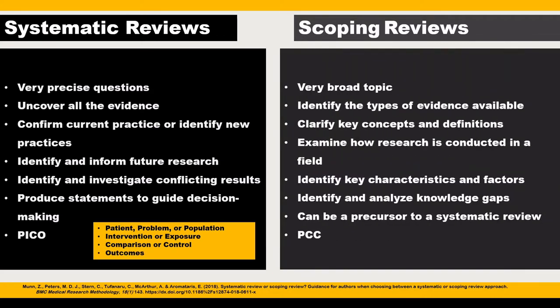On the other hand, a scoping review may investigate a very broad topic. This may be an emerging topic or a topic where there isn't enough homogeneity in the field to perform a meta-analysis. A scoping review's goal is to identify key concepts and characteristics and make statements about knowledge gaps in future research. A scoping review may even be a precursor to a systematic review.